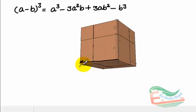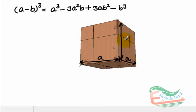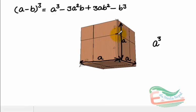Here, I have a cube whose side is a — the total length is a, and its height and breadth is also a. So, volume of this total cube is equal to a cube. And let's suppose that this distance is b.